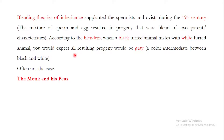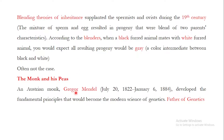Then came the era of the great Mendel, the monk and his peas. The era was from 1822 to 1884, and Mendel developed the fundamental principles that would become the modern science of genetics. Therefore, Mendel is truly known as the father of genetics, and his theories and experiments were of great value to present-day genetics.